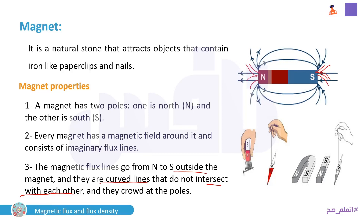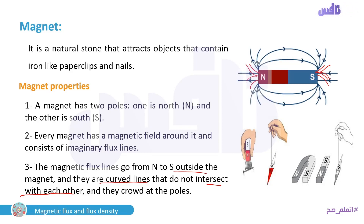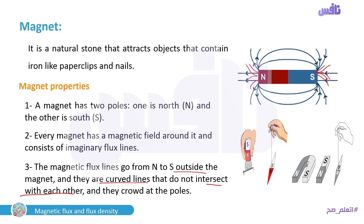The flux lines crowd near the poles — they are dense close to the poles — but far away from the magnet they become sparse, meaning a very low number of flux lines.